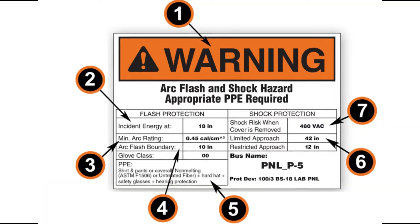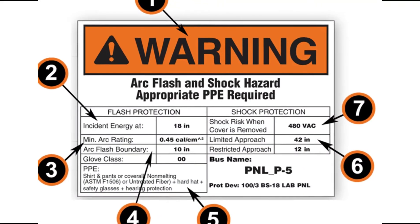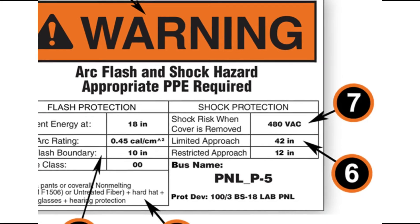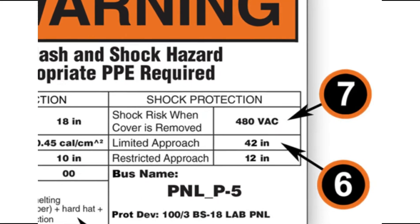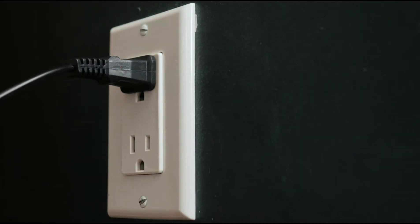Number six: limited approach and restricted approach fields — these are shock hazard approach boundaries, defined in more detail in the arc flash workplace safety guideline. The prohibited approach boundary was also removed in the 2015 NFPA 70E edition. Number seven: shock risk when the cover is removed. The nominal voltage of the equipment must also be listed on the label. The nominal voltage of a circuit or system is a nominal value assigned to the circuit for the purpose of conveniently designating its voltage class. For example, the nominal rural residential voltage in the U.S. is 120 volts, although the actual voltage may range from 114 to 126 volts.